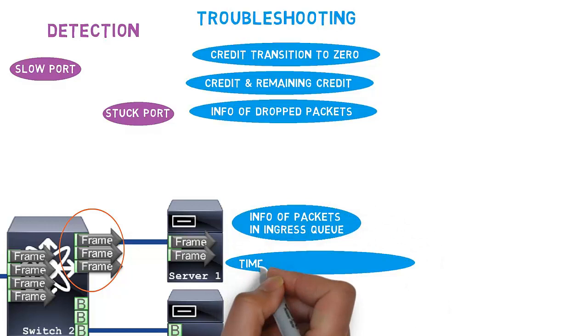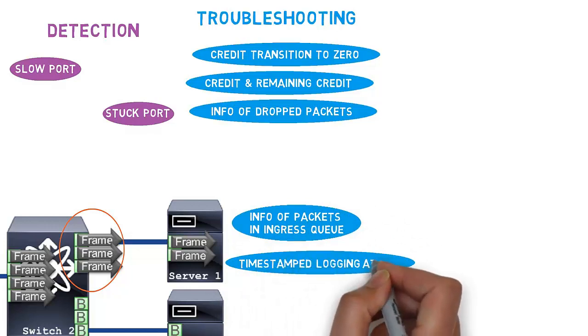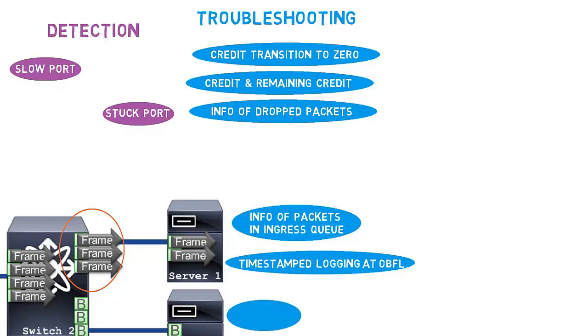Multiple events are logged and stored at onboard failure logging buffer to maintain the data for longer duration. In addition, the port monitoring feature enables SAN administrators to watch for specific events and trigger actions like alarms, traps, and disabling the ports.